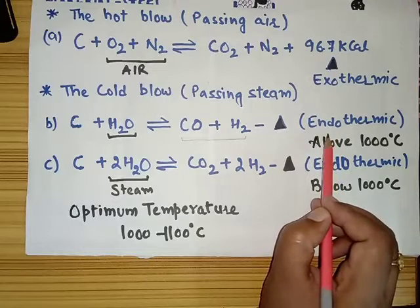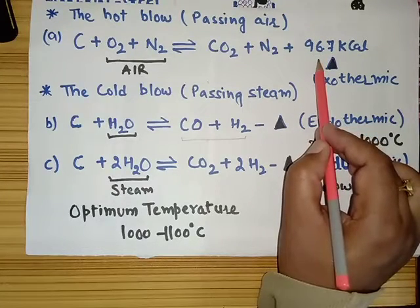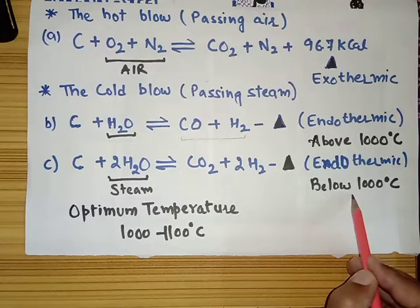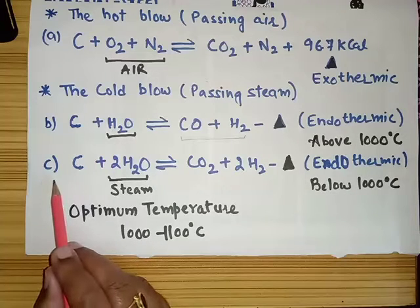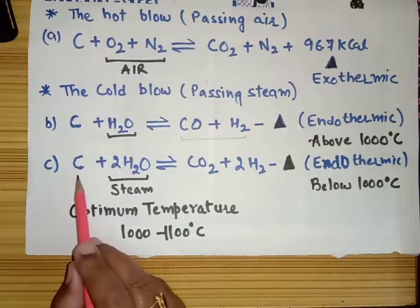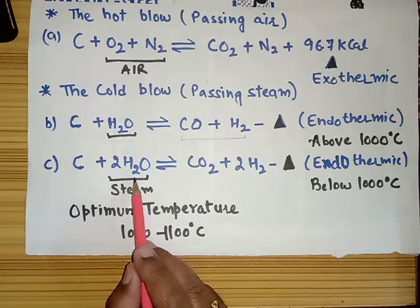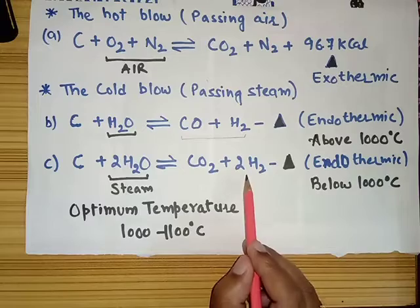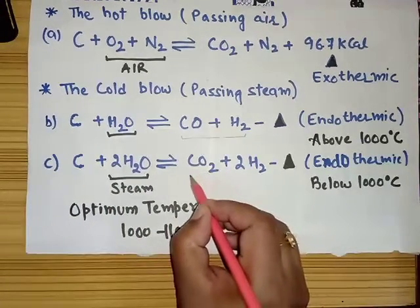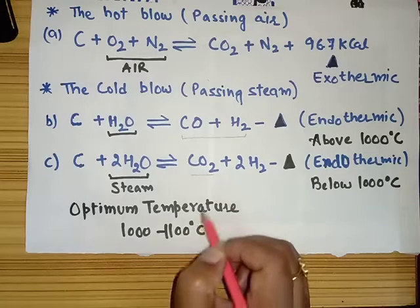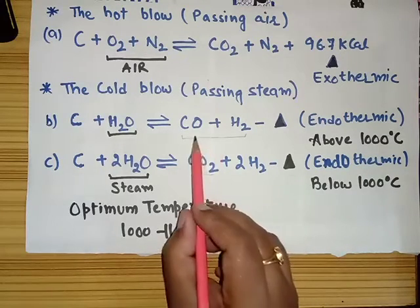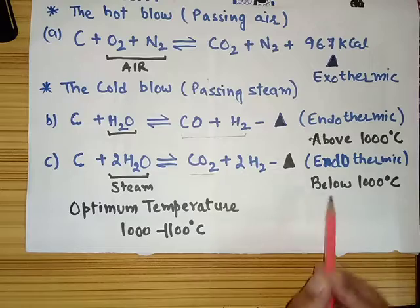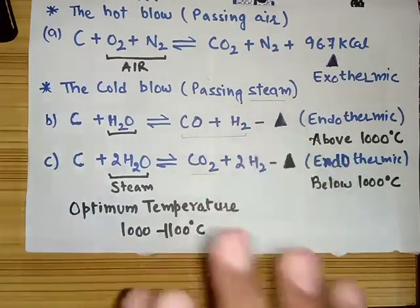As soon as reaction B proceeds, it absorbs a lot of energy and the temperature of the system may fall below 1000°C. When the temperature falls below 1000°C, reaction C starts occurring. In reaction C, carbon may react with the steam present in the gas producer to give carbon dioxide plus hydrogen. Reaction C is not desirable because it produces carbon dioxide. We do not need carbon dioxide in water gas — we just need carbon monoxide and hydrogen. So when the temperature falls below 1000°C, the supply of steam is cut down.